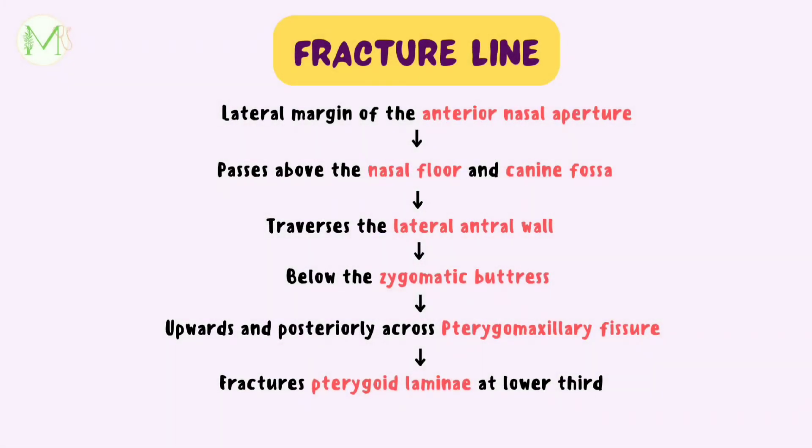We can describe the fracture line of Le Fort 1 fracture as follows. The fracture line starts at a point on the lateral margin of the anterior nasal aperture. It passes above the nasal floor and also passes laterally above the canine fossa, traverses the lateral antral wall, passes down below the zygomatic buttress, then inclines upward and posteriorly across the pterygomaxillary fissure to fracture the pterygoid laminae at the junction of their lower third and upper two thirds. It may sound complicated but I hope this flowchart makes it easier.